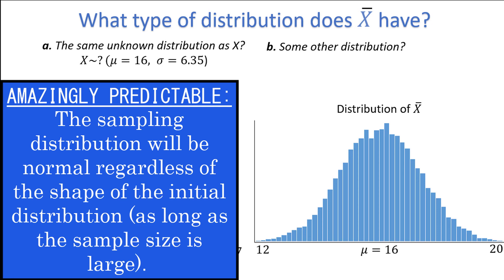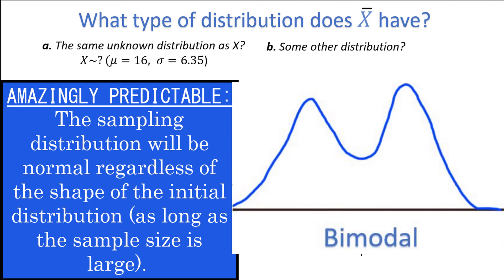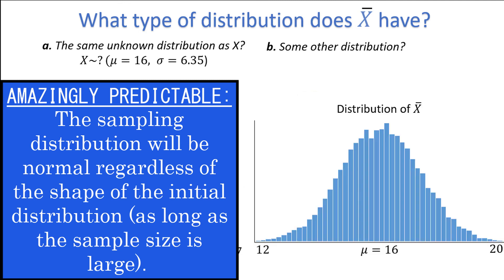It's amazing because it doesn't matter if the original distribution is left skewed, right skewed, bimodal, uniform, or anything else. The central limit theorem says that the distribution of sample means will be approximately normal with a large enough sample size.